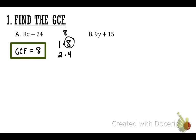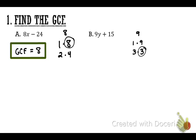Let's look at problem B: 9Y plus 15. The smallest number is 9. The factors of 9 are one times nine and three times three. Start with the biggest: can a nine go evenly into 15? No. Go to the next number down — can a three go into both 9 and 15? Yes. So the GCF equals 3.